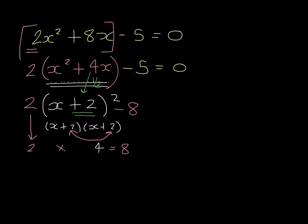But we also have to remember that there is a negative 5, which has been tracked down from previous lines. So in its fully completed square format we have 2 bracket x plus 2 all squared take away 13 equals 0.